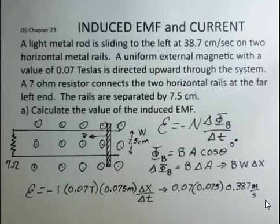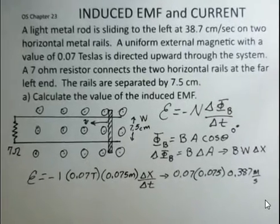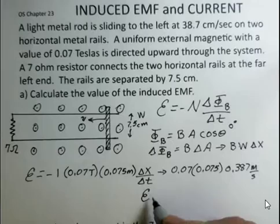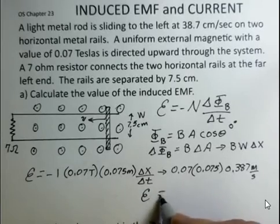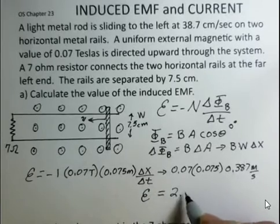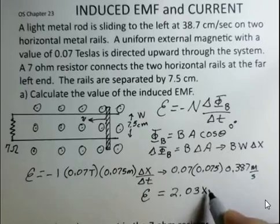And we can multiply those out, those three numbers. And we can come up with the EMF, the magnitude of the EMF, being 2.03 times 10 to the minus 3 volts.